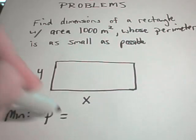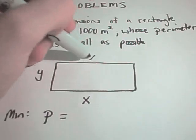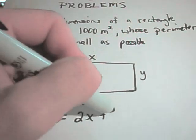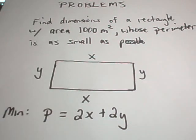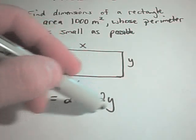The thing that I'm trying to in this case minimize is the perimeter, and the perimeter of this rectangle would be X plus X, Y plus Y, so I would have 2X plus 2Y.